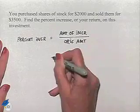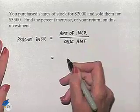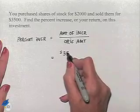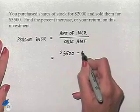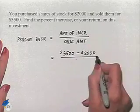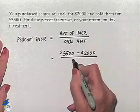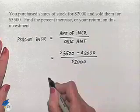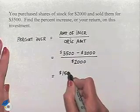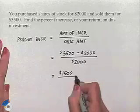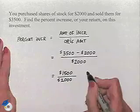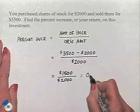So in this problem, we're going to find the amount of the increase by taking the difference between $3,500 and $2,000. We're going to divide that by the original amount of $2,000. We come up with a difference of $1,500 divided by $2,000, and that is going to give us a fraction.